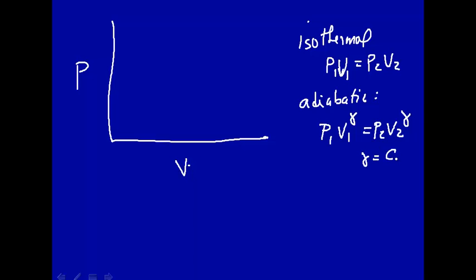Where gamma, remember, was the ratio of heat capacities, heat capacity at constant pressure over heat capacity at constant volume.